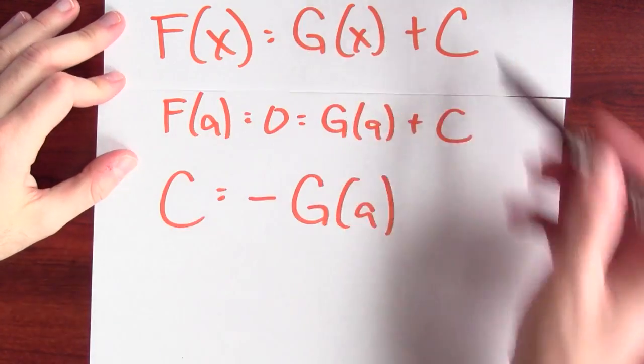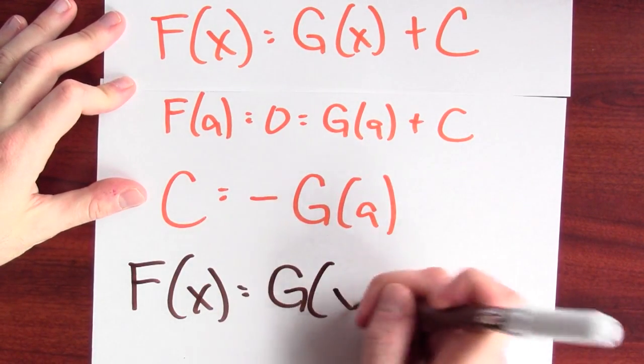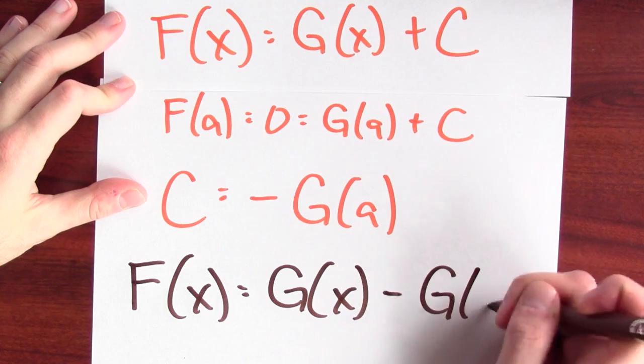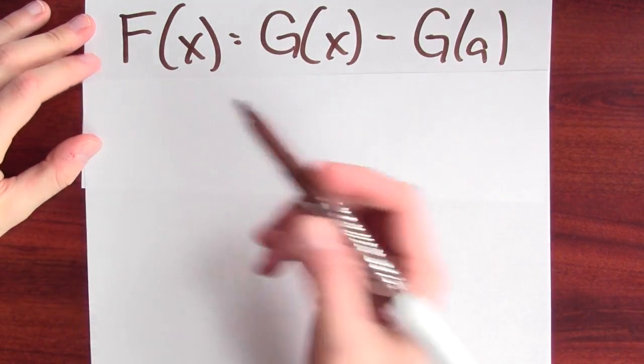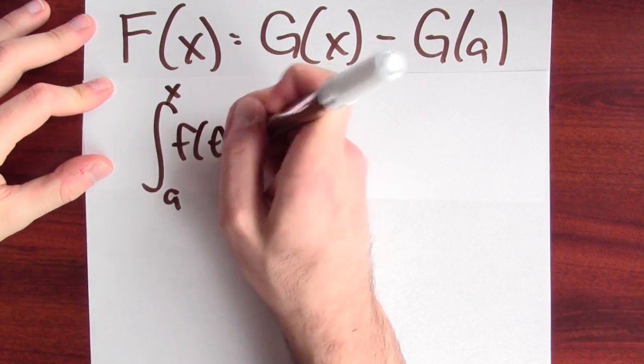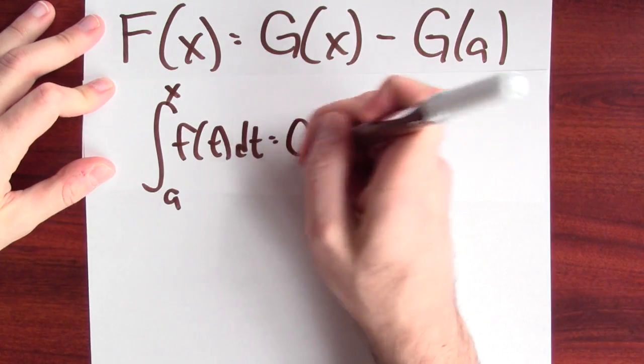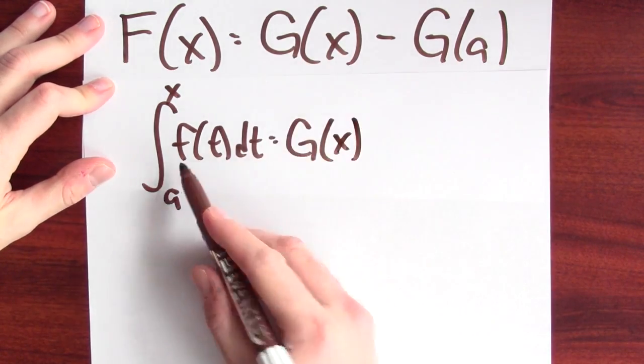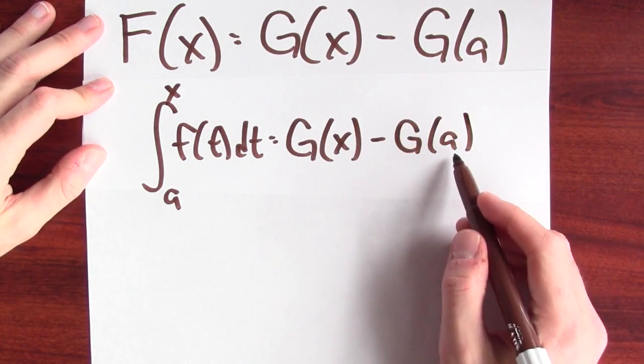Now we can put it all together. So this fact and this fact then combine to give me that big F of x is big G of x minus big G of a. So does that help at all? Yes, this solves all of our problems. Remember what big F of x was. Big F of x was the integral from a to x of f of t dt. And what this formula is telling you is that this integral is some anti-derivative for little f evaluated at x minus that anti-derivative evaluated at a.